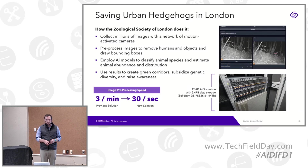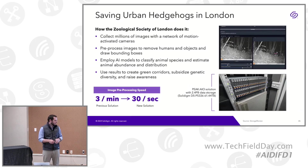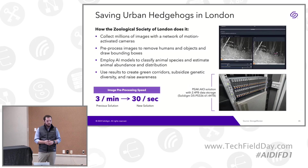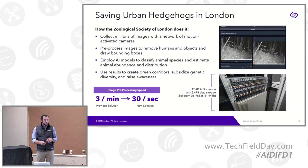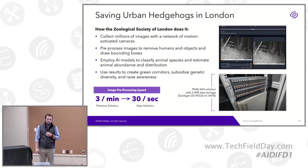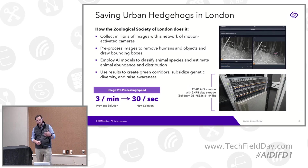They've built an edge data center at the zoo — actually a repurposed seldom-used reception area. The rack contains two DGX-H100 servers and two Peak AIO servers full of Solidigm 61-terabyte QLC SSDs. That enables them to churn through preprocessing and run inference on images more quickly than ever before.